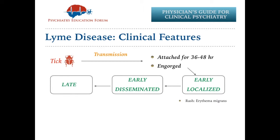The erythema migrans rash is mostly a uniform, erythematous, oval or circular rash with a median diameter of 16 cm — the range is from 5 to 70 cm. The CDC defines this rash as an expanding red macule or papule that can reach at least 5 cm in size, and it can happen with or without central clearing. With central clearing, this is what the bull's-eye rash is. But it can happen even without central clearing. Close to 20% of rashes are bull's-eye, so 80% are not. Mostly we see a single rash, but close to 10 to 20% can be multiple rashes.